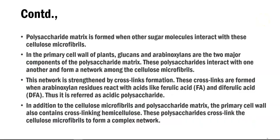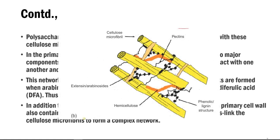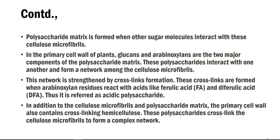After formation of cellulose, a further highly organized polysaccharide matrix can be formed with the help of sugar molecules. These sugar molecules interact with the cellulose microfibrils to form the matrix. In the primary cell wall, glucans and other sugars such as arabinoxylans are the major components of the polysaccharide matrix. These polysaccharides interact with one another and form a network among the cellulose microfibrils, which is further strengthened by cross-linking — mainly mediated by the reaction of arabinoxylan residues with ferulic acid and diferulic acid.